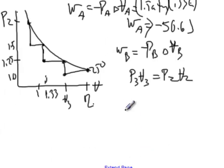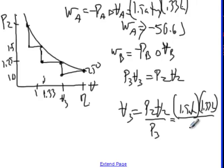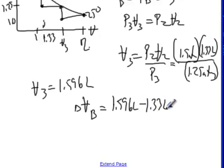So that means our V3 is going to be P2V2 divided by P3. Our pressure in the second expansion was 1.5 atmospheres. Our volume at the beginning of the second expansion, that was 1.33 liters. And our pressure during the third expansion, or at 0.3, is 1.25 atmospheres. So this allows us to calculate V3 to 1.596 liters. So delta V for expansion B is 1.596 liters minus the starting volume of 1.33 liters, and that difference is 0.266 liters.